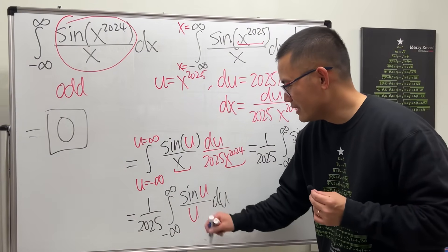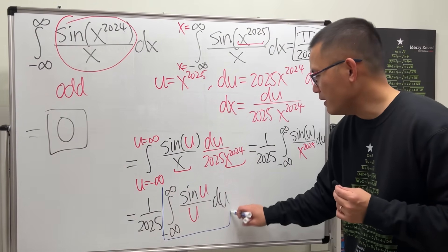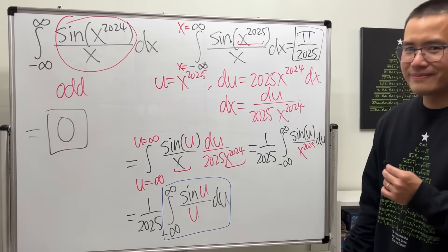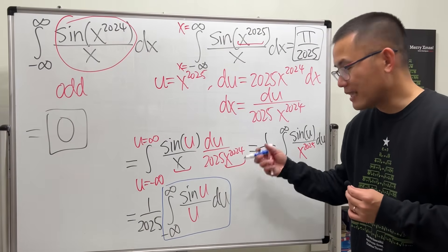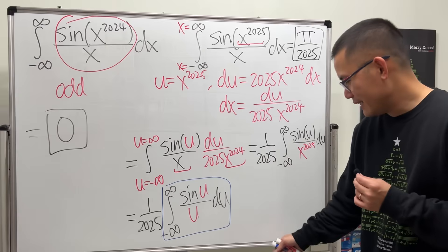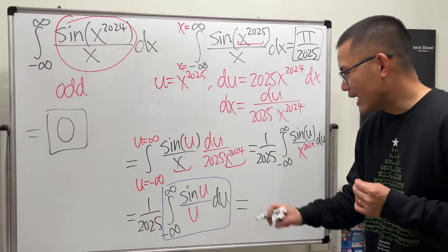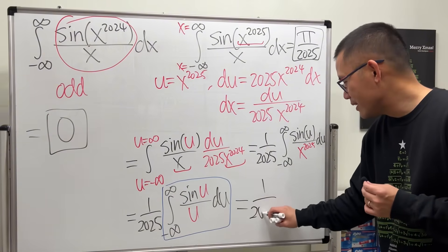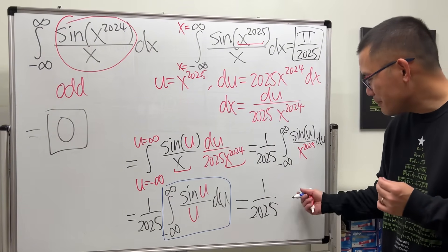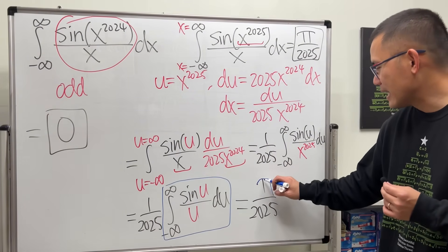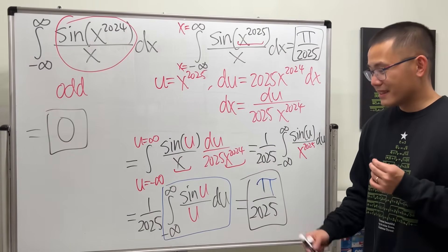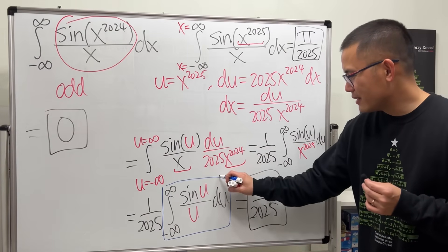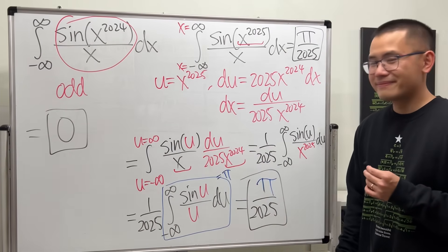And now, ladies and gentlemen, this is one of the famous integrals that you should know. I have another video on this if you would like to see that. But this right here is just equal to π. So all in all, we have 1 over 2025 times π. Perhaps I'll put π on the top like this. And that's it. This thing right here is equal to π. Let me just indicate that. That's it.